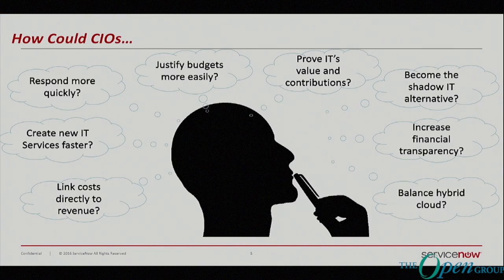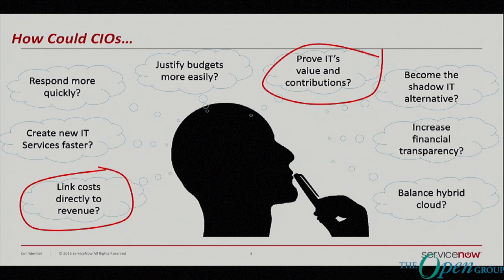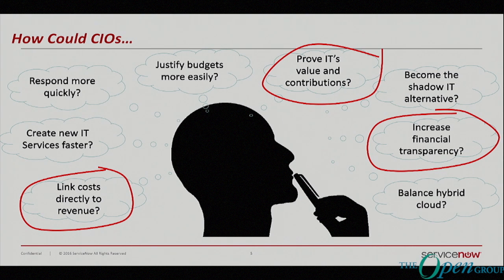So how can CIOs better improve what they're doing today? You're faced with a lot of challenges. I've noticed, Mr. CIO, that you've got a couple of key challenges in your environment: one is linking cost directly to the revenue, understanding the value of IT's contributions, and also having better financial transparency of where your investments are going — so your business trusts and continues to invest in your IT organization. I met with your account team and understood these are key issues within your organization. Would you agree with that?